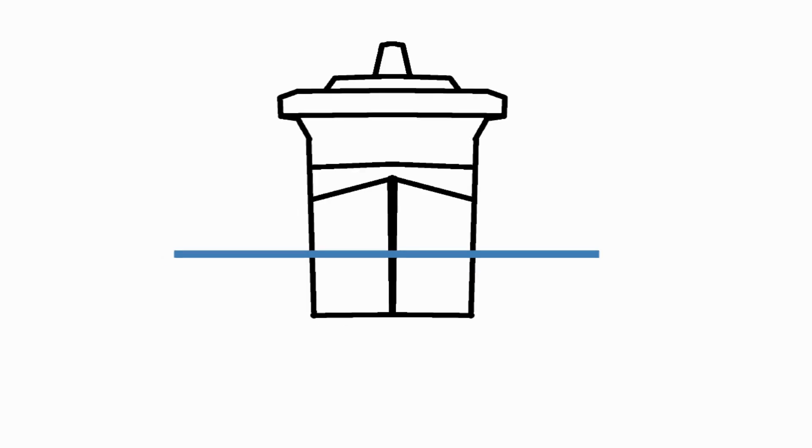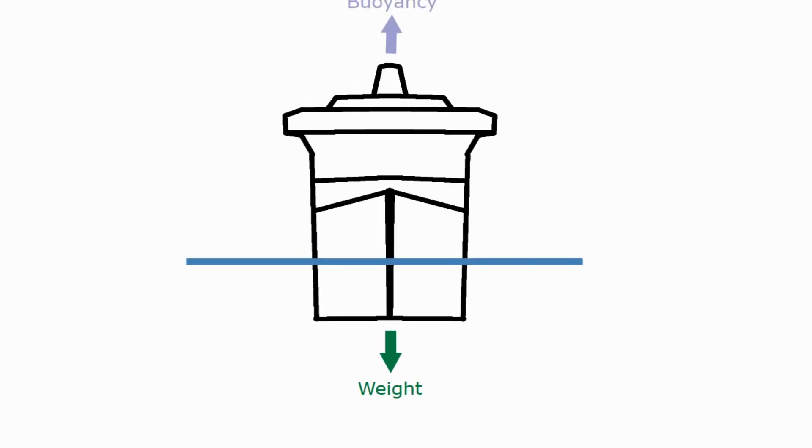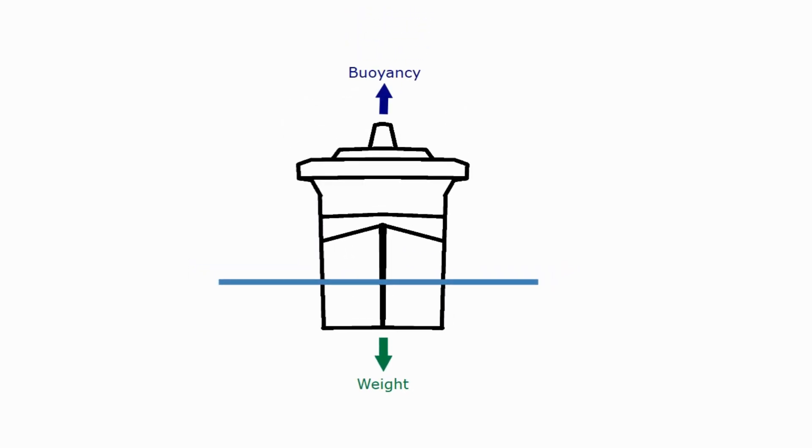So what forces are actually acting on the ship? Well we've got the weight which is pulling it down and that is balanced by the buoyancy which is pushing it up. Of course if the weight is greater than the buoyancy the ship would sink and if the buoyancy is greater than the weight the ship would continue to move upwards. With the buoyancy and weight in balance, the ship is floating.